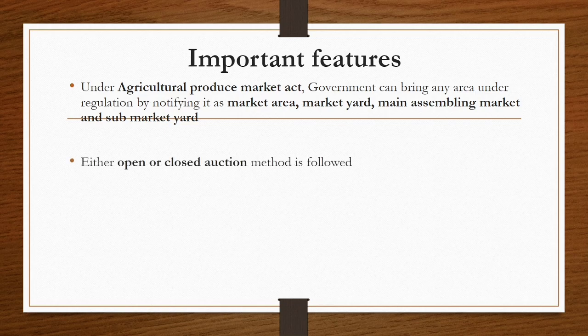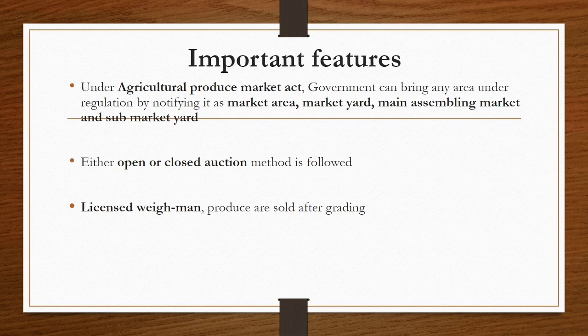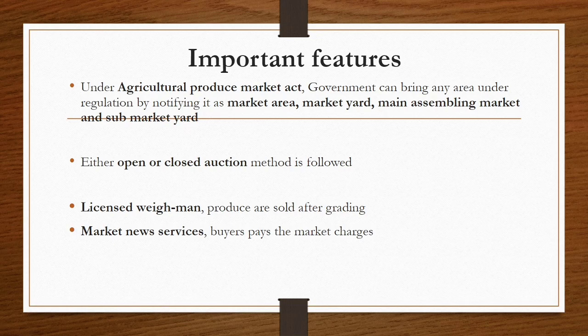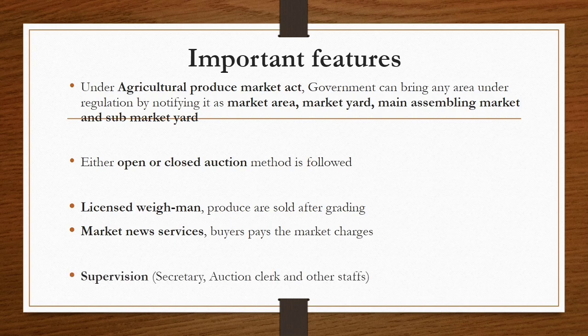The produce may be sold either in open auction or closed auction method. Licensed warehousemen will handle sales, but sales of produce will be taken only after grading of that particular produce. Market news services will be available for both producer and consumer — prices will be informed to the producer so they can sell at prevailing market prices. Staff, a secretary, or an auction clerk will be there for supervising all marketing activities.